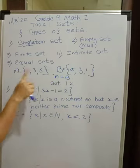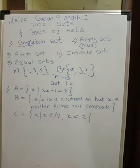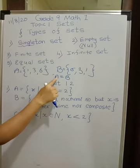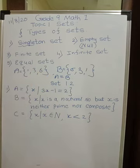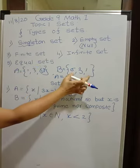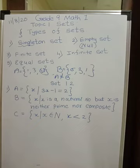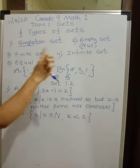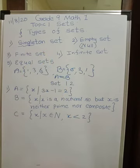Two sets A and B are said to be equal if every element of set A is also present in set B, and every element of set B is also present in set A. Both ways it should hold — all elements present here and all elements present there. Otherwise, for example if A has one extra element like 7, then all elements of B are present in A but all elements of A are not present in B, and in that case we can't say A is equal to B.